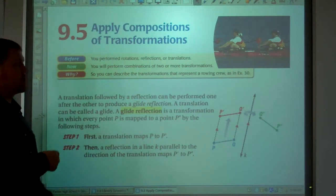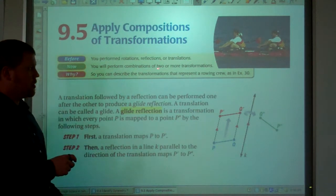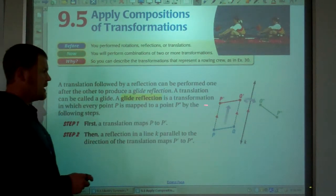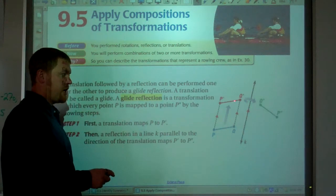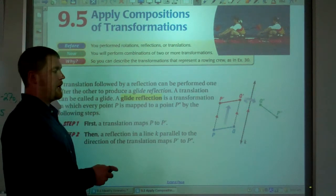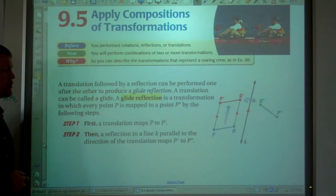Alright, composition of transformations. Multiple, two or more transformations together. So in this case, a glide reflection, we're first translating it or gliding it, and then we're reflecting through line K. Two or more transformations.